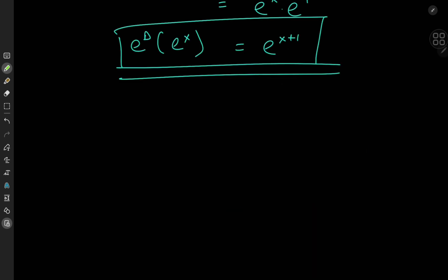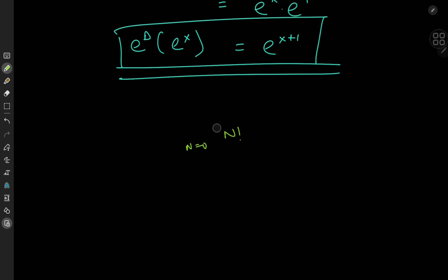And that means we have e to the x times e to the 1, which is e to the x plus 1. So the exponential function e to the x just shifts the argument by one unit. This result is actually pretty cool because x could be a real number or a complex number. Recall that for the complex exponential e to the z, the Laurent series expansion looks exactly the same as the Maclaurin series for the real-valued case. So let's replace x by i times x.